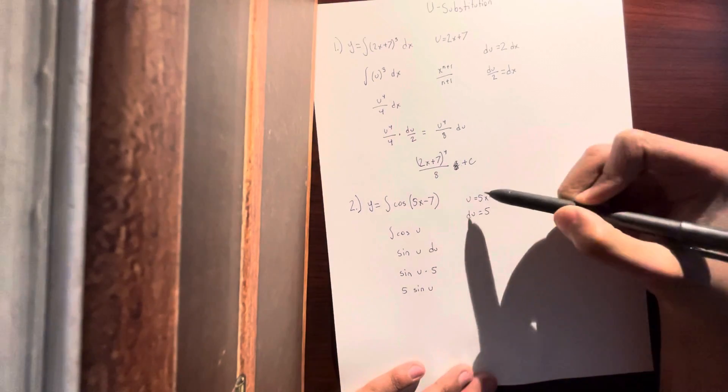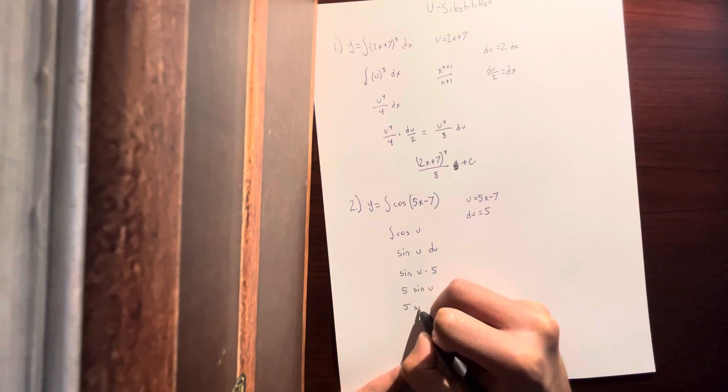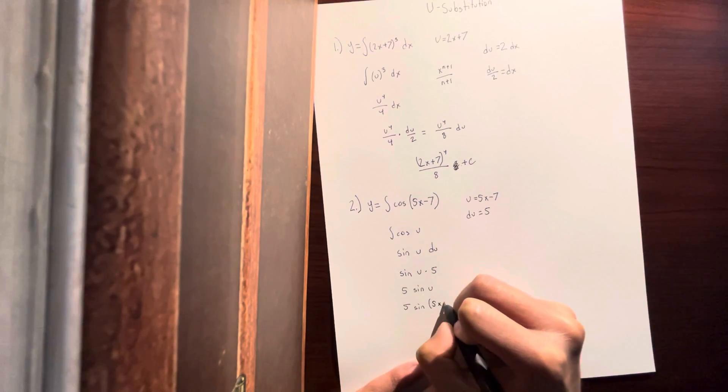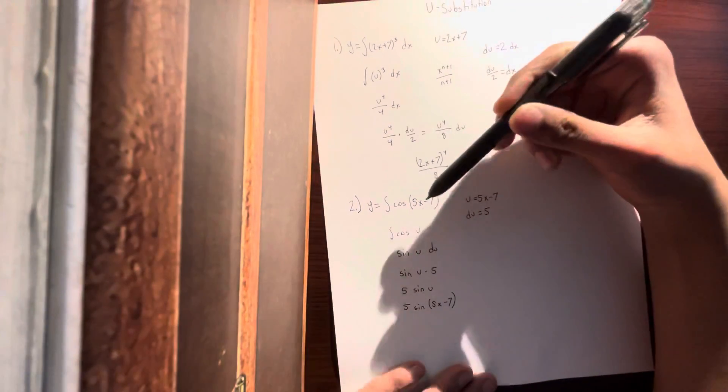You finally plug in u again and you get 5 sin(5x - 7). And that is the integral of this problem.